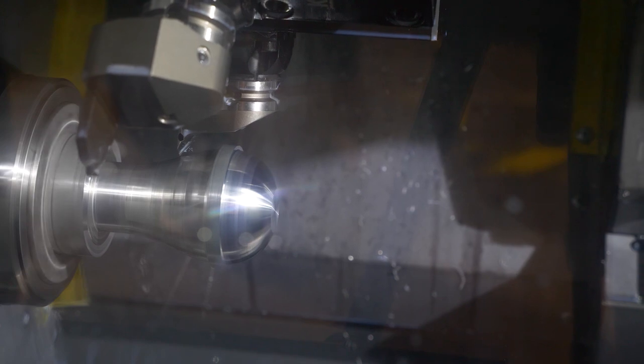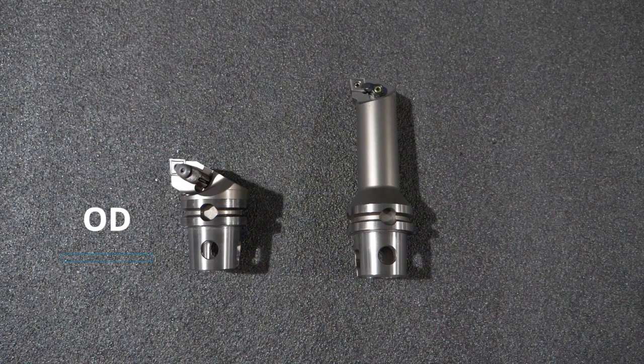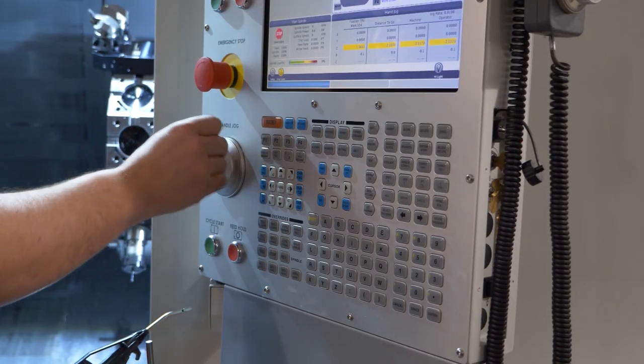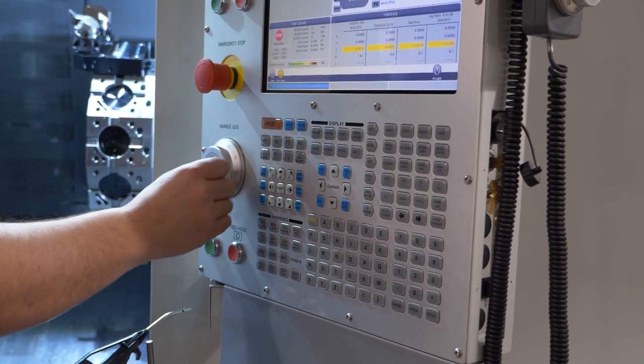Lathe tooling is a little more abstract than mill tooling, but essentially they can be broken into two main categories. There are turning tools, also referred to as outer diameter tools or OD tools for short, and there are boring bars, which are also called inner diameter tools or ID tools for short. For a great rundown on CNC turning, check out the prototype that we've linked below.